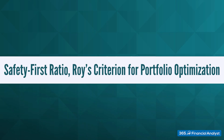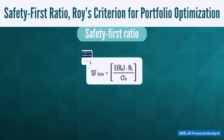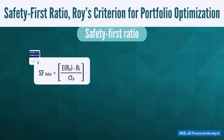We'll talk about the safety first ratio and Roy's criterion for portfolio optimization. Here's the safety first ratio. Does it remind you of another familiar ratio? It is almost identical to the Sharpe ratio. However, instead of R sub F, the risk-free rate, we use R sub L, which is the threshold level return.